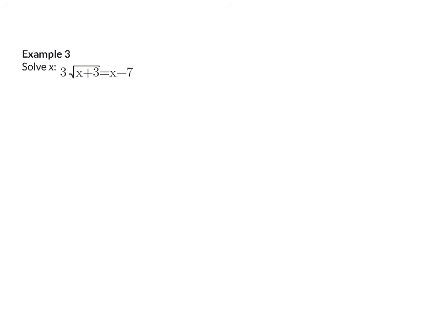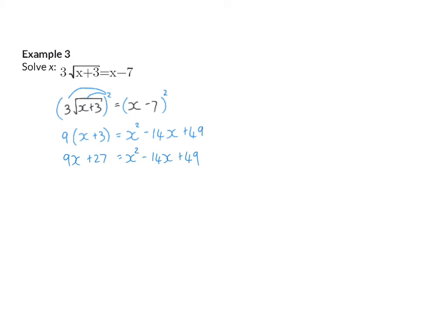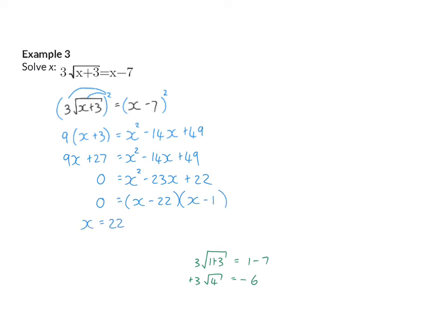In example 3, the square root term is already alone, so I can start by squaring both sides. On the left, the 3 and the square root must both be squared, giving 3 times 3 equals 9, and the root squared gives x plus 3. On the right, remember the middle term: minus 14x. I simplify the left and put it in standard form equal to 0, then factorize into x minus 22 times x minus 1, so x equals 22 or x equals 1.